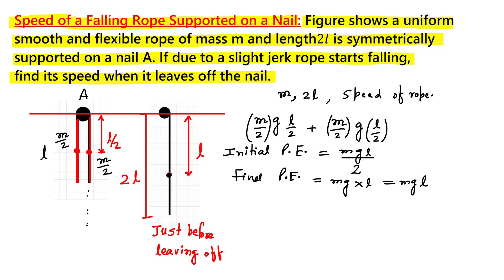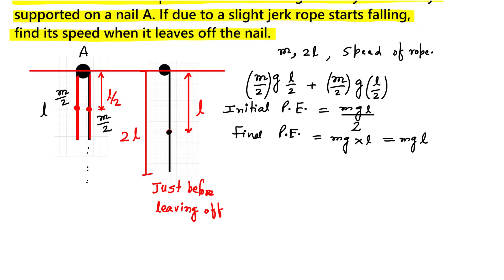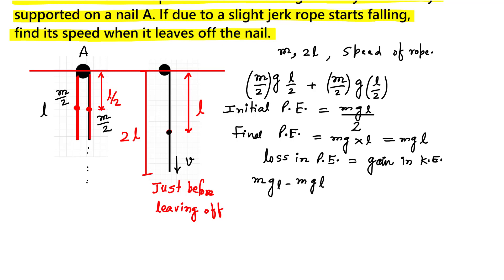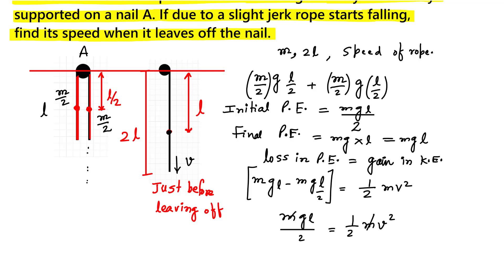Now we apply energy conservation: loss in potential energy equals gain in kinetic energy. The rope is moving vertically downward with speed V. Loss in potential energy = MgL − MgL/2 = MgL/2. Gain in kinetic energy = ½MV². So MgL/2 = ½MV², giving V = √(gL).